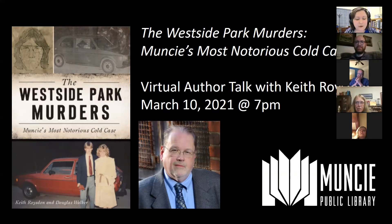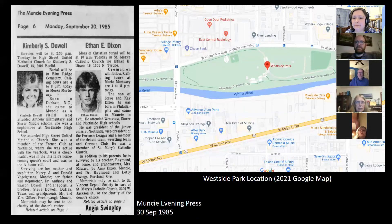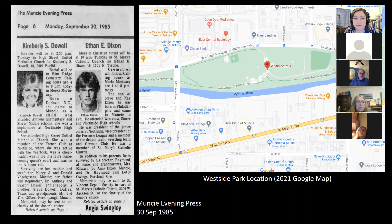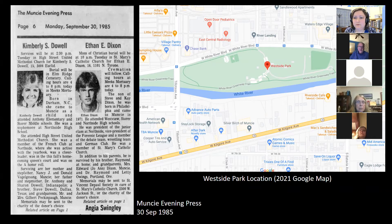So Keith, for those who don't know the story, what were the West Side Park murders and what is this new book about? The murders occurred in September 1985. The young couple who were killed in West Side Park were Ethan Dixon and Kimberly Dowell. Ethan was just 16, Kimberly was just 15. Their bodies were discovered in Ethan's car, where they had been shot close to midnight on Saturday, September 28, 1985.